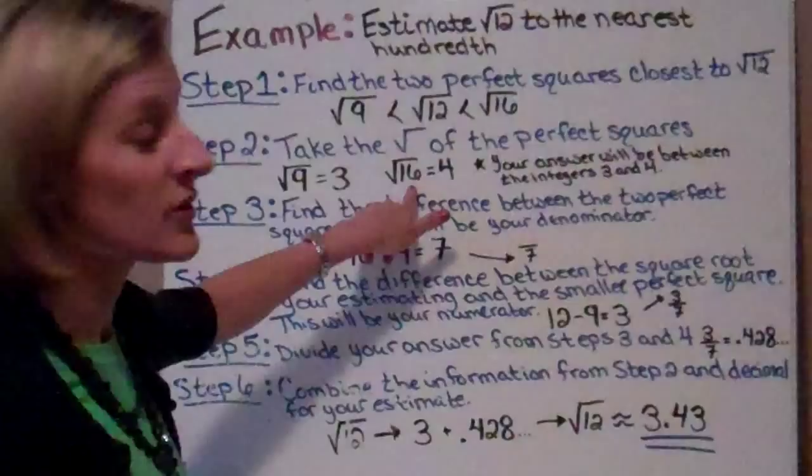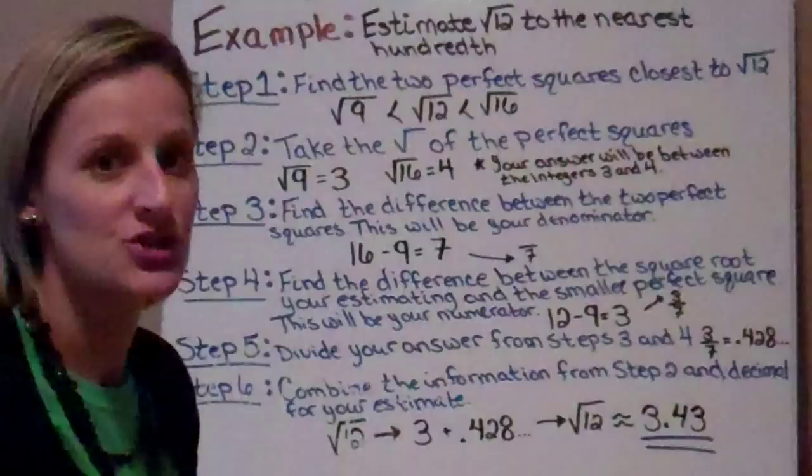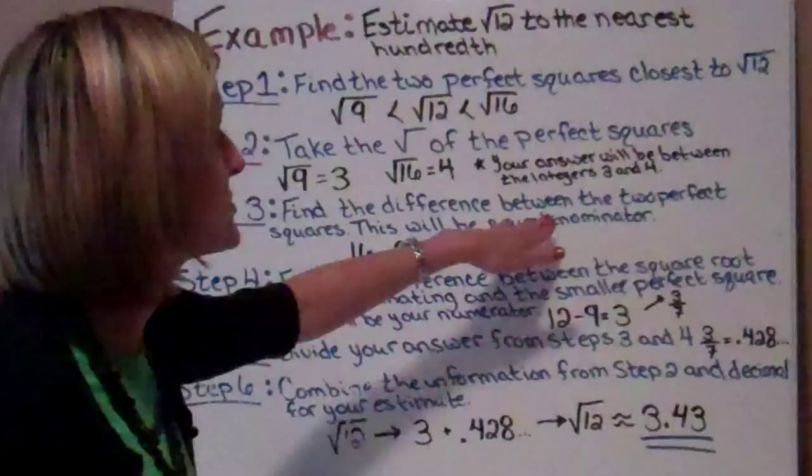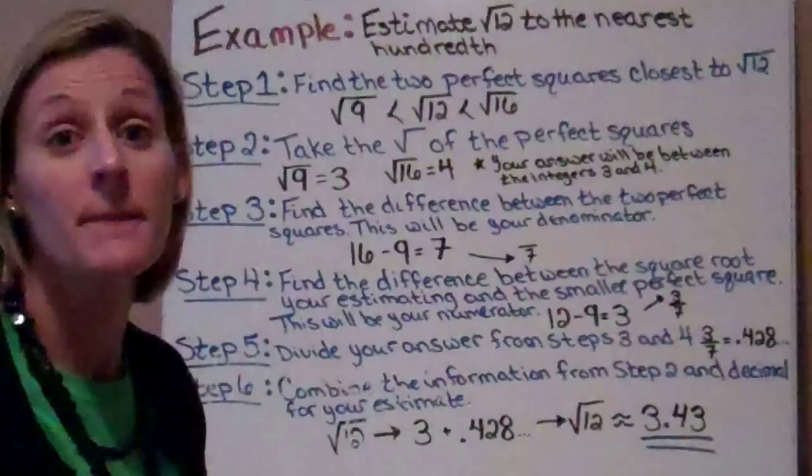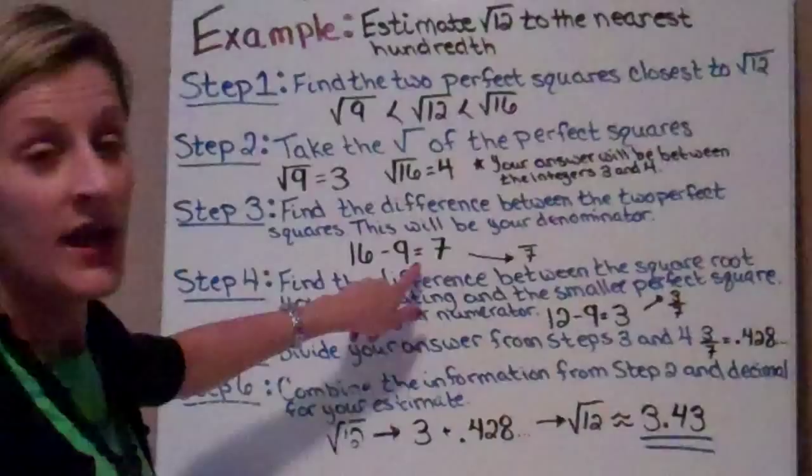The square root of 9 is 3. The square root of 16 is 4. So basically, our answer is going to be between the integers of 3 and 4. Step 3 says to find the difference between the two perfect squares, and this is going to be your denominator — we're going to make a fraction. So I'm going to do 16 minus 9, and that's 7.